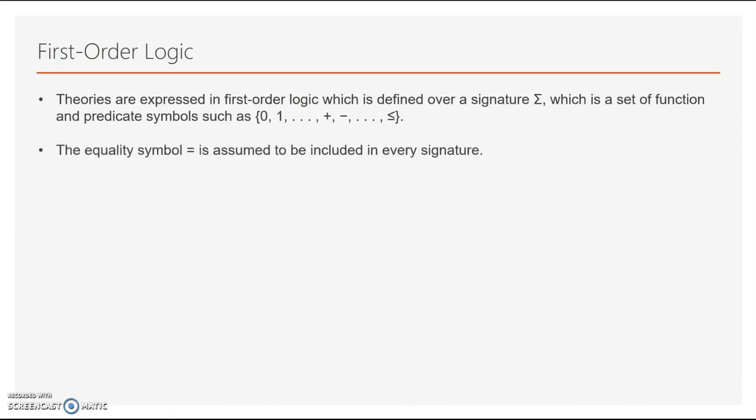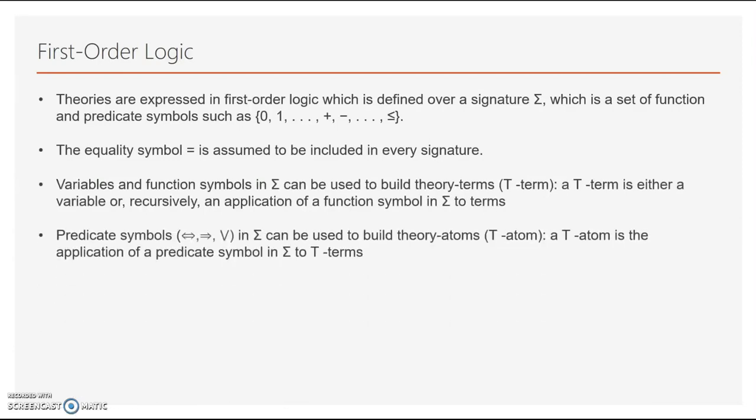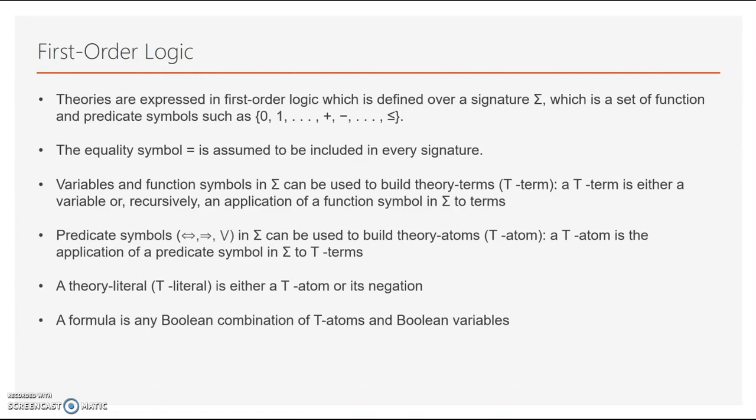We assume that equality symbol is present in every signature. Variables and function symbols are usually used to build T term. Predicate symbols are used to build T atom. A theory literal or T literal is either T atom or its negation. And finally, a formula is a boolean combination of T atoms and boolean variables. For instance, the following formula is in first-order logic.